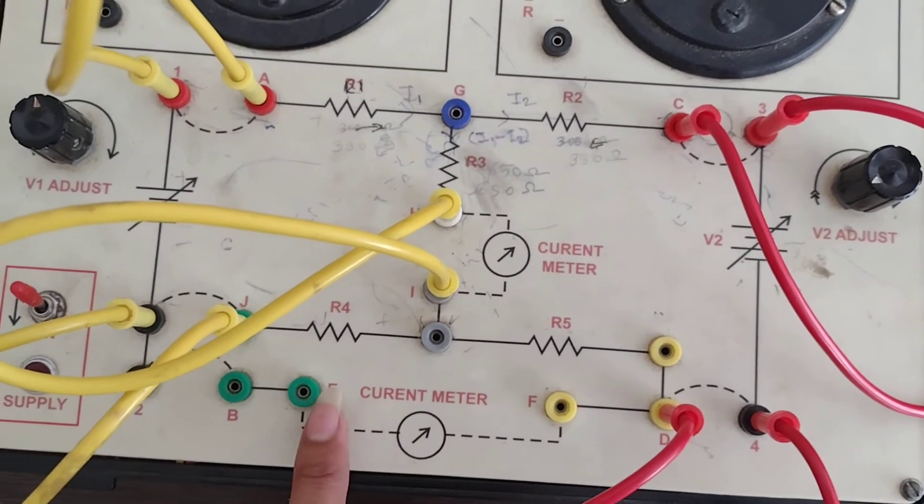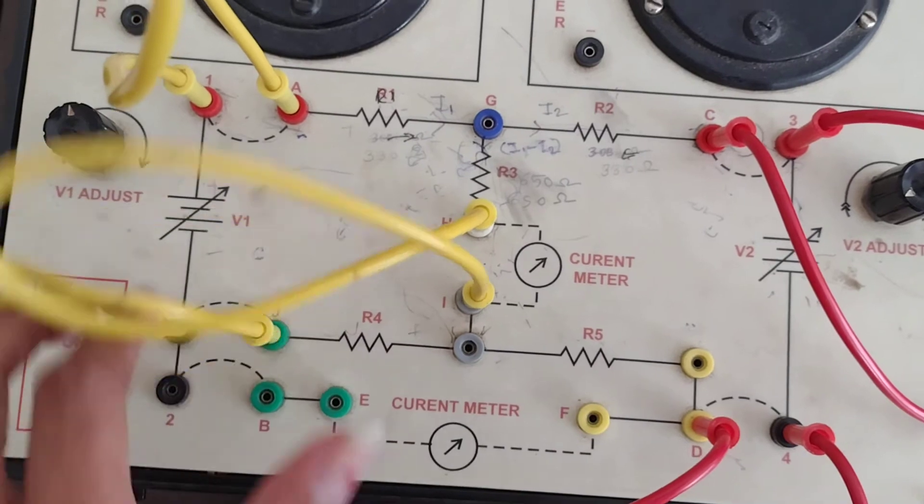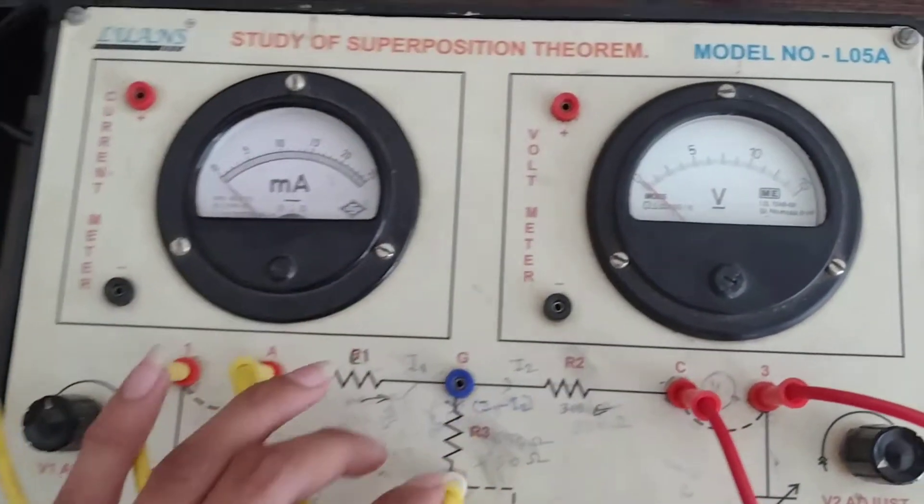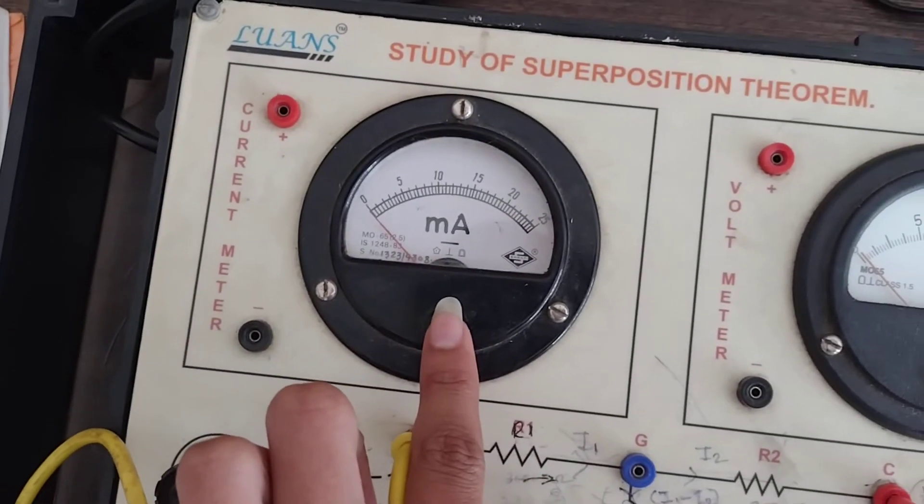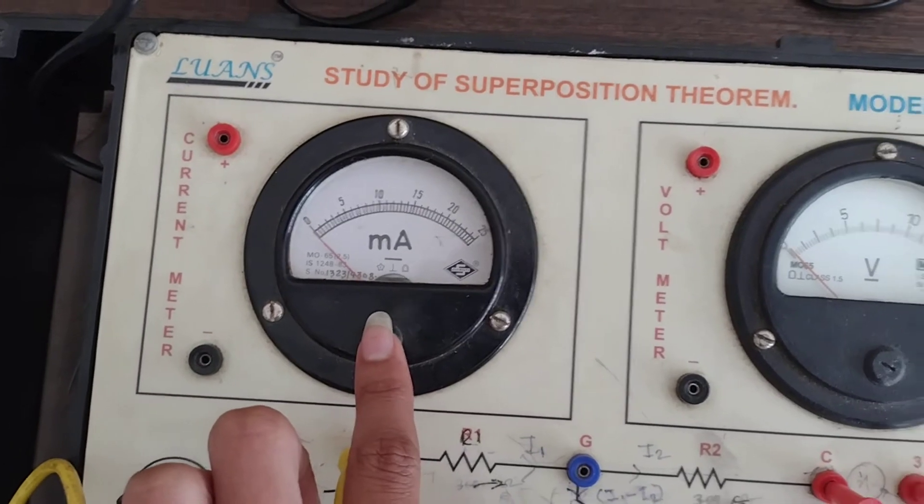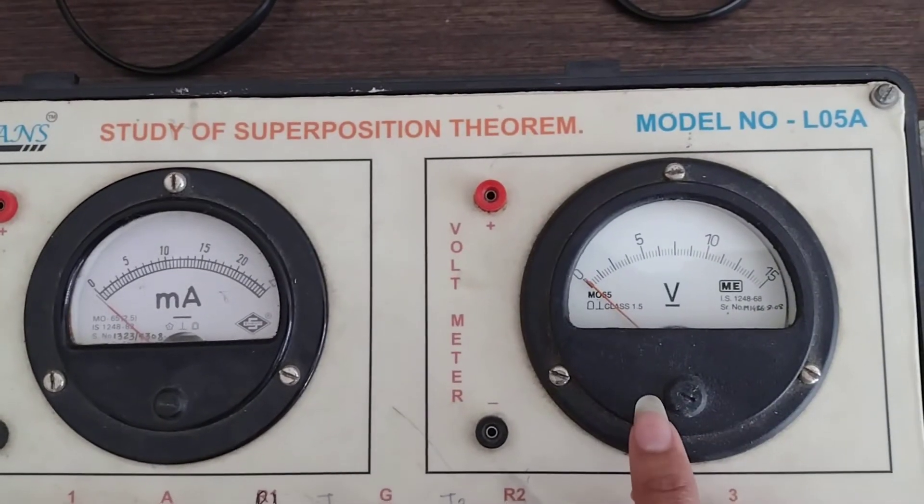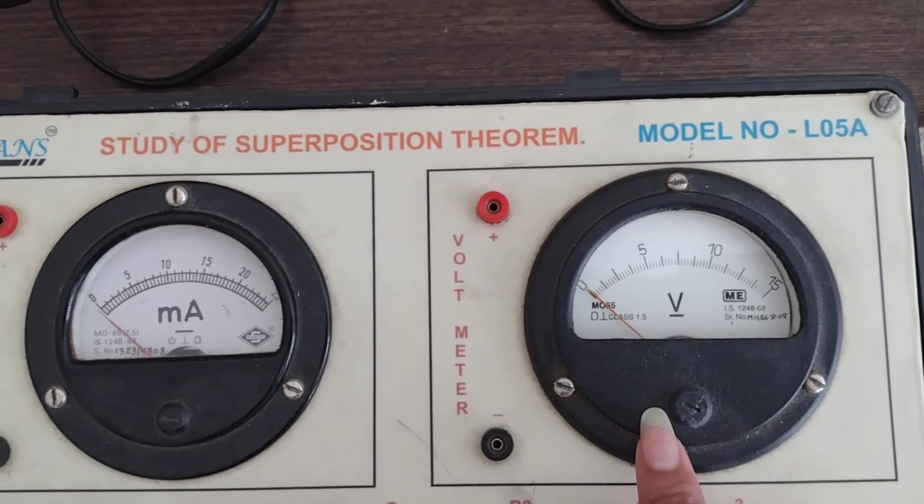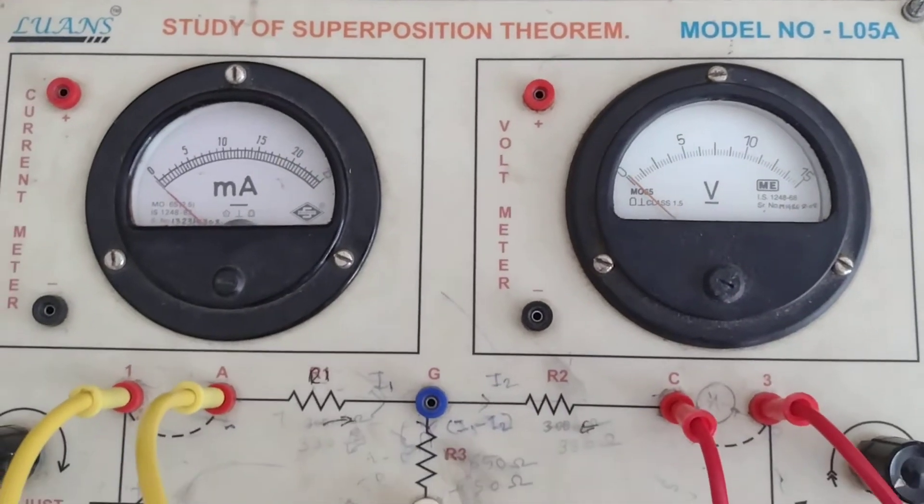There's an open circuit. You can see the milliammeter to measure current, and the voltmeter to measure voltage.